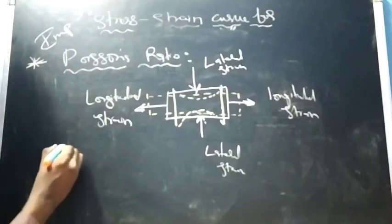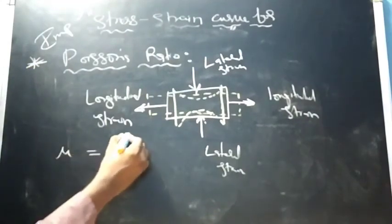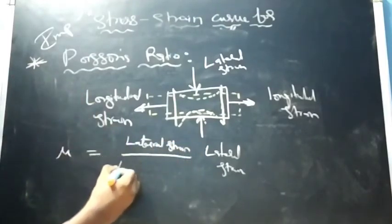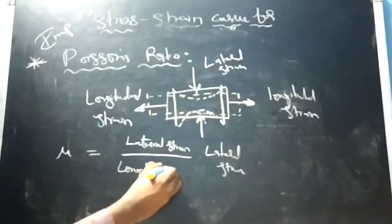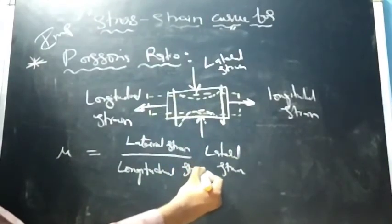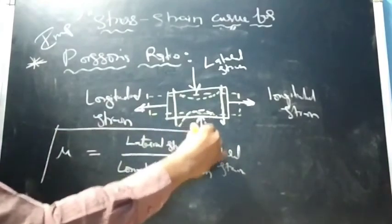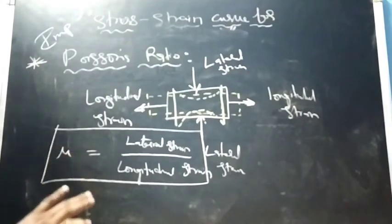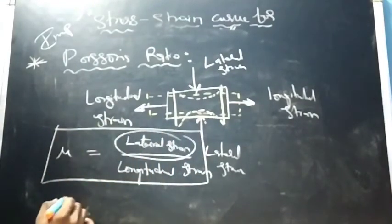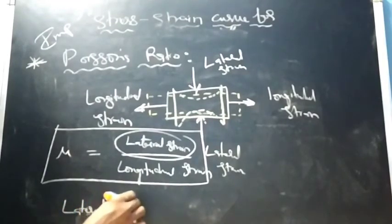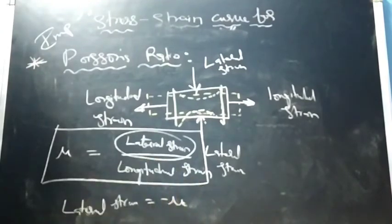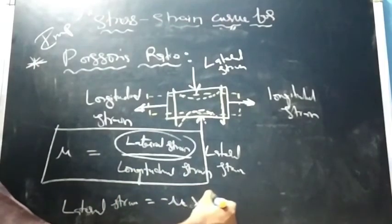Poisson's ratio is denoted by mu (μ). It is written as: μ = lateral strain / longitudinal strain. Don't just try to remember formulas — try to imagine the concept so you enjoy the subject. If you want to calculate lateral strain individually: lateral strain = −μ × longitudinal strain (negative because it acts opposite in direction).